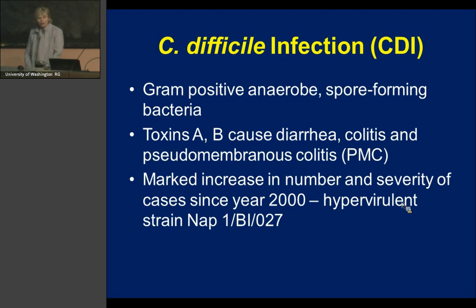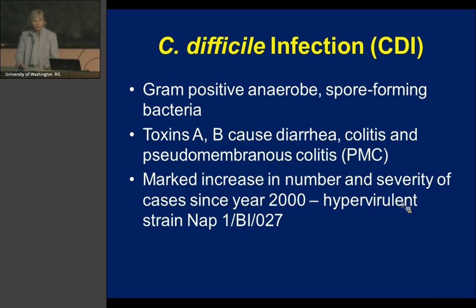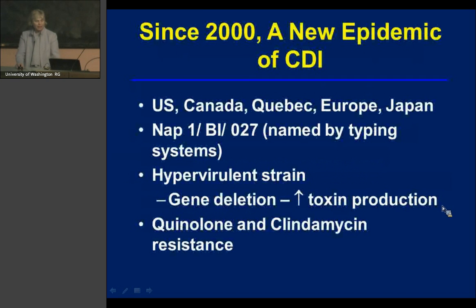There has been a marked increase in the number and severity of cases since the year 2000, correlated with the emergence of a hypervirulent strain called NAP1, or BI, or 027, depending on the different typing systems used to name that strain.